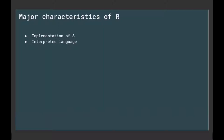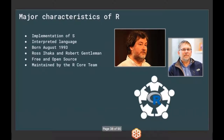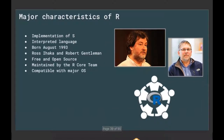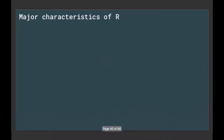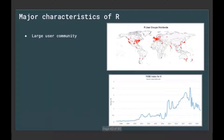Some major characteristics of R: it's an implementation of the S language. It's an interpreted language, meaning calls are executed directly rather than being compiled to machine-readable format first. It was born around August 1993 by Ross Ihaka and Robert Gentleman. It's free and open source, maintained by the R core team. It's compatible with all major operating systems and has a very large worldwide community.